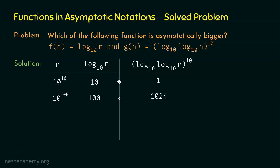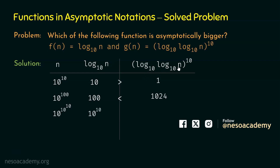Is it the case that g(n) is always bigger than f(n) after this point? Let's take n as 10^(10^10) — quite a large value. Log(10^(10^10)) base 10 equals 10^10. For g(n), we can replace log n base 10 by 10^10, and log(10^10) base 10 is 10.